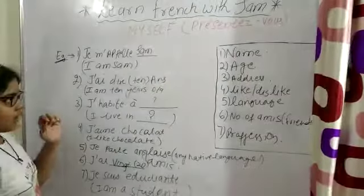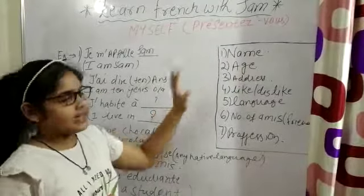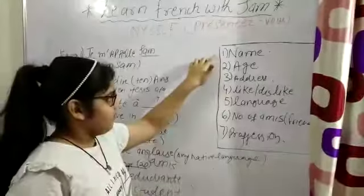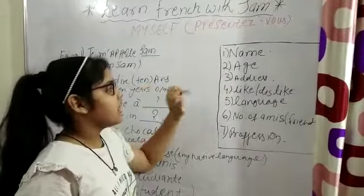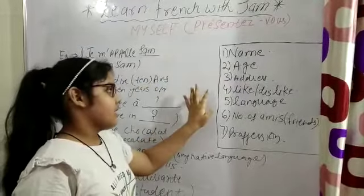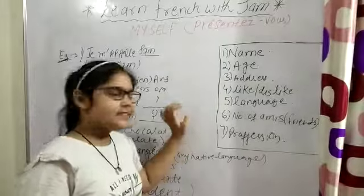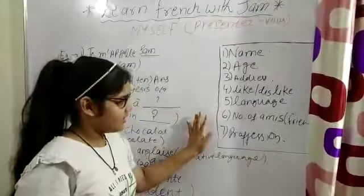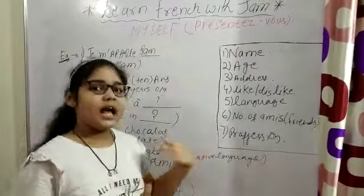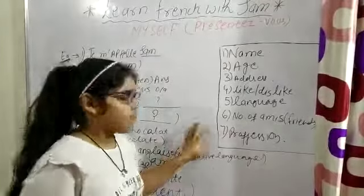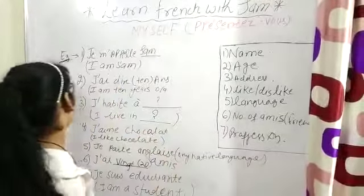So in myself we tell our name, age, address, likes and dislikes, language, number of friends means army and profession. So for example, I am giving you my message.